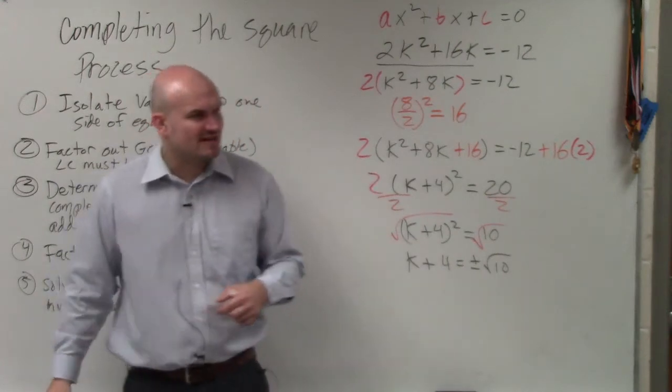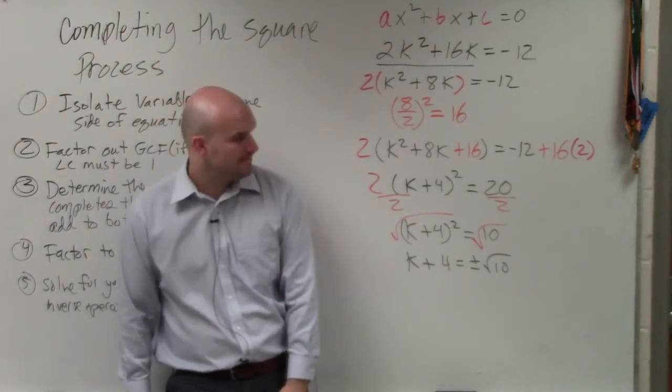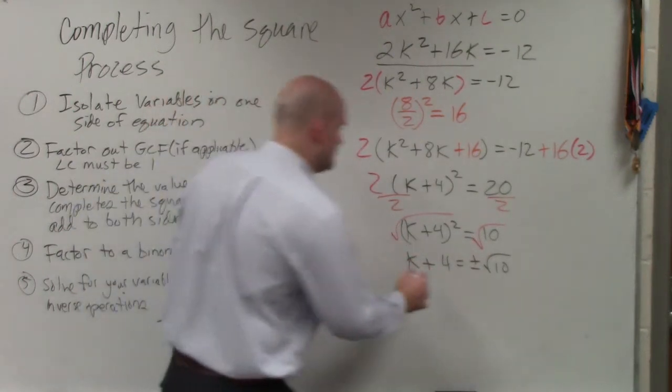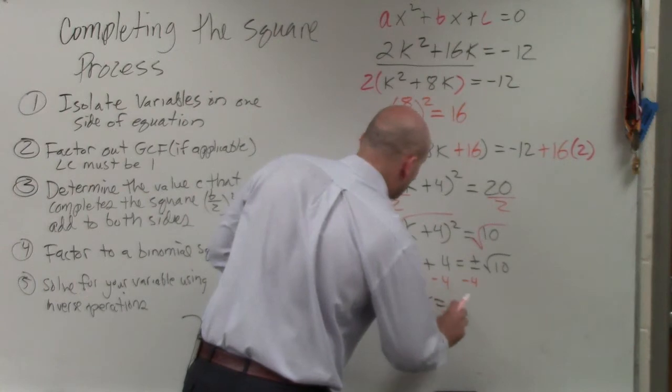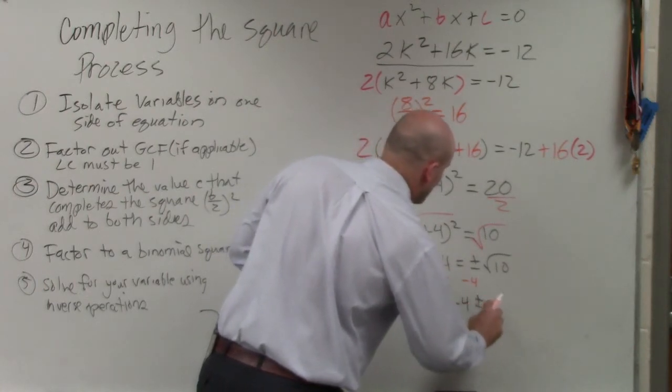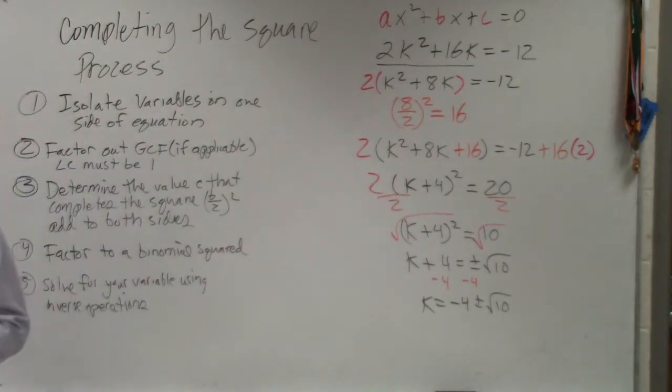Is there a square number that divides into 10? Can you break that further? Can you simplify the square root of 10? Nope. So therefore, then I just subtract the 4. And my final answer is k equals negative 4 plus or minus the square root of 10. If you guys can simplify the radical, please do. And that's it.